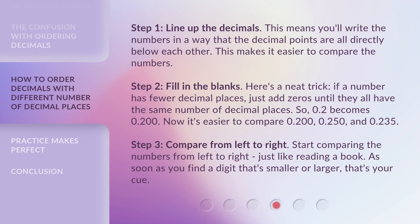Step 1. Line up the decimals. This means you'll write the numbers in a way that the decimal points are all directly below each other. This makes it easier to compare the numbers.